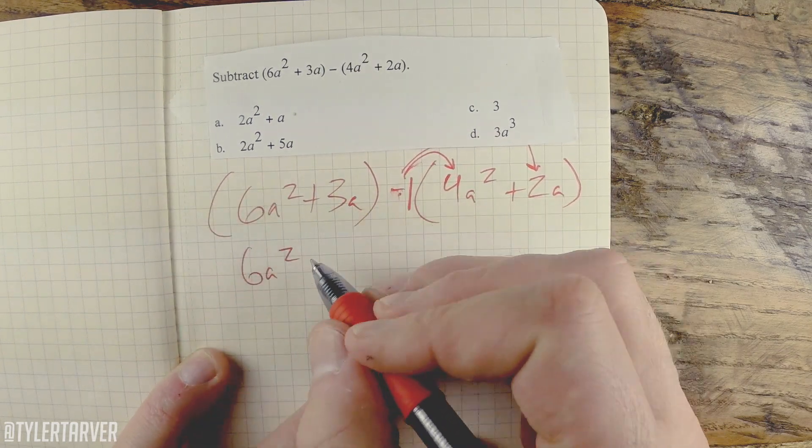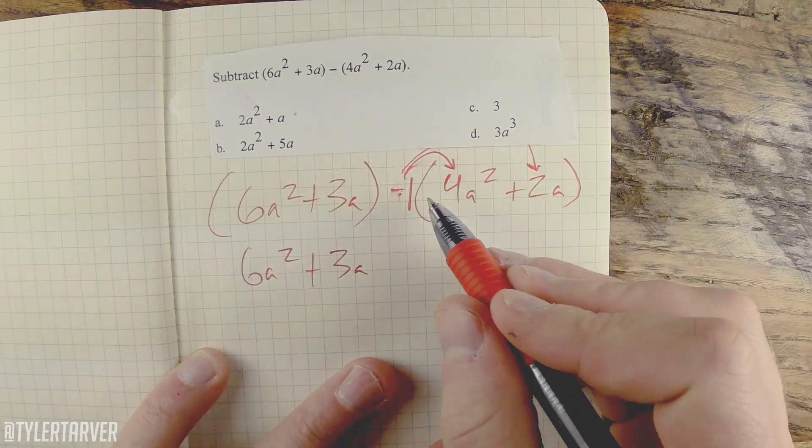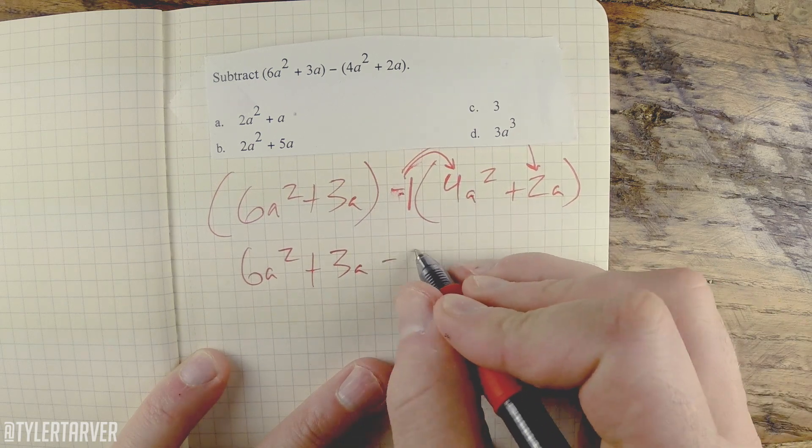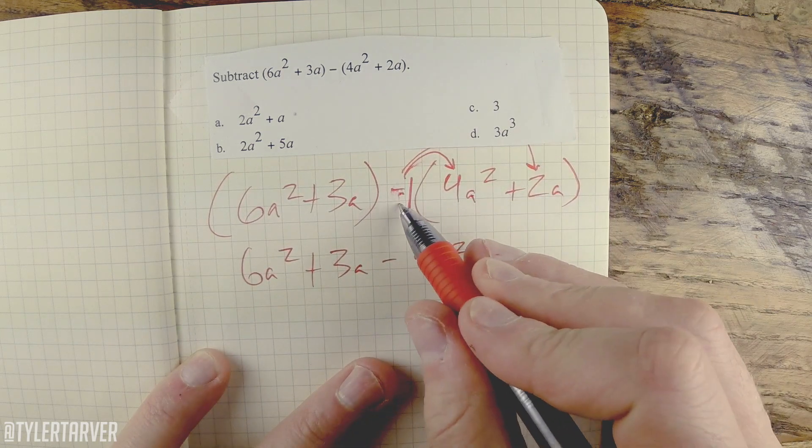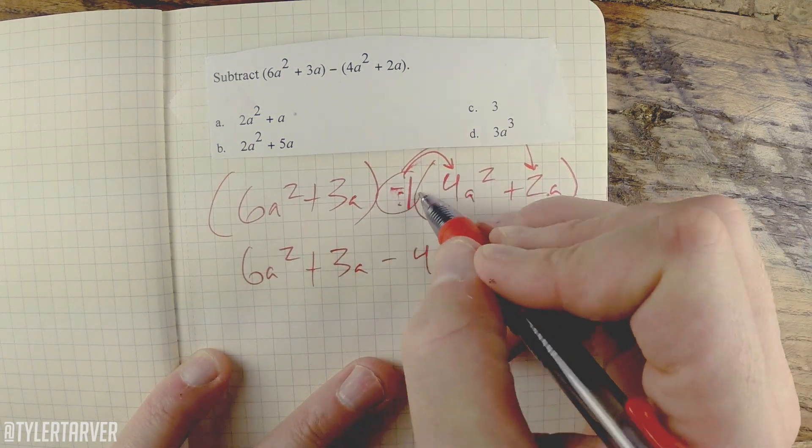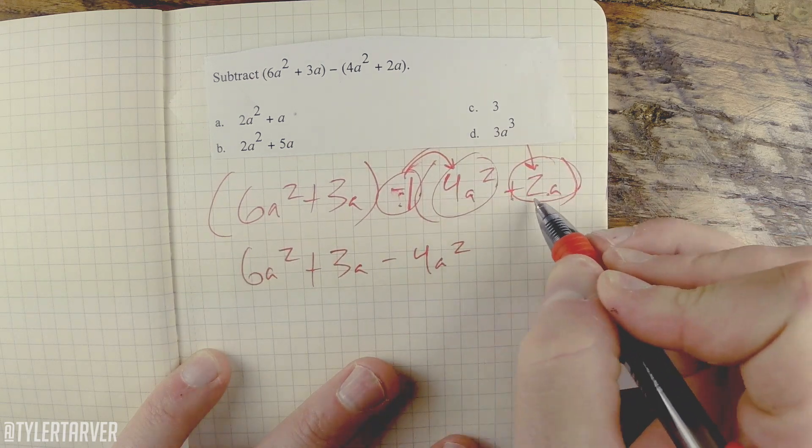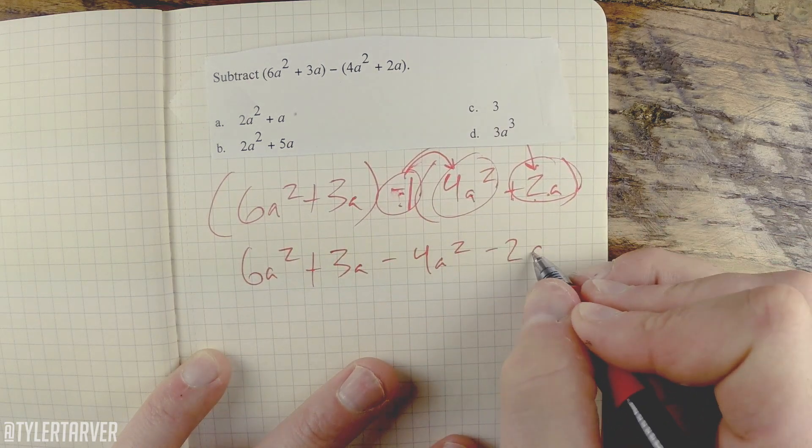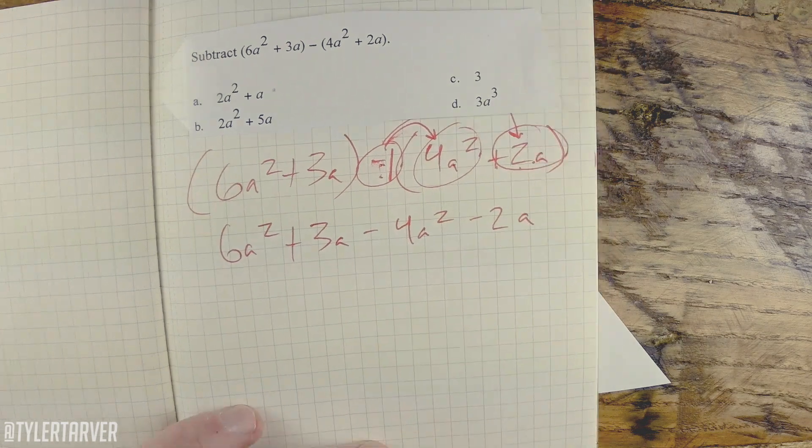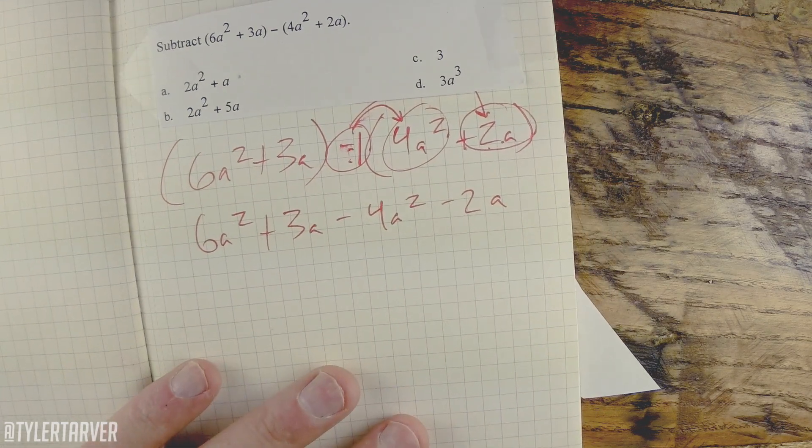Everything on the beginning stays the same because there's nothing being distributed there. So it's negative 4a² and then that needs to go to that one as well. Don't forget it goes to both, so positive 2 turns into a negative 2. Okay, so now we can work the problem.